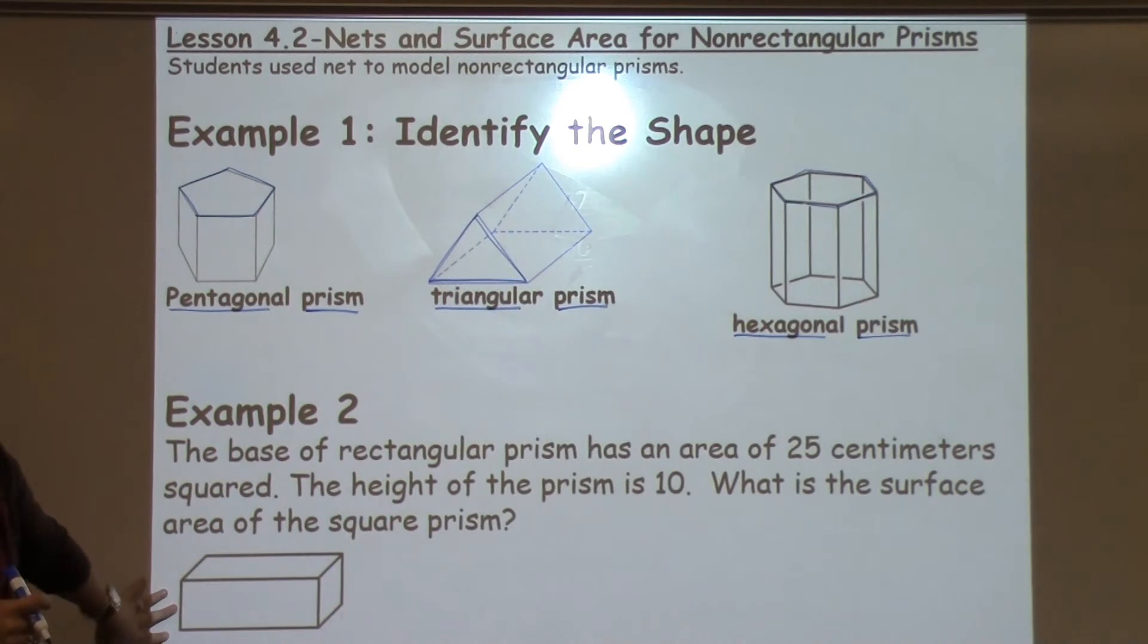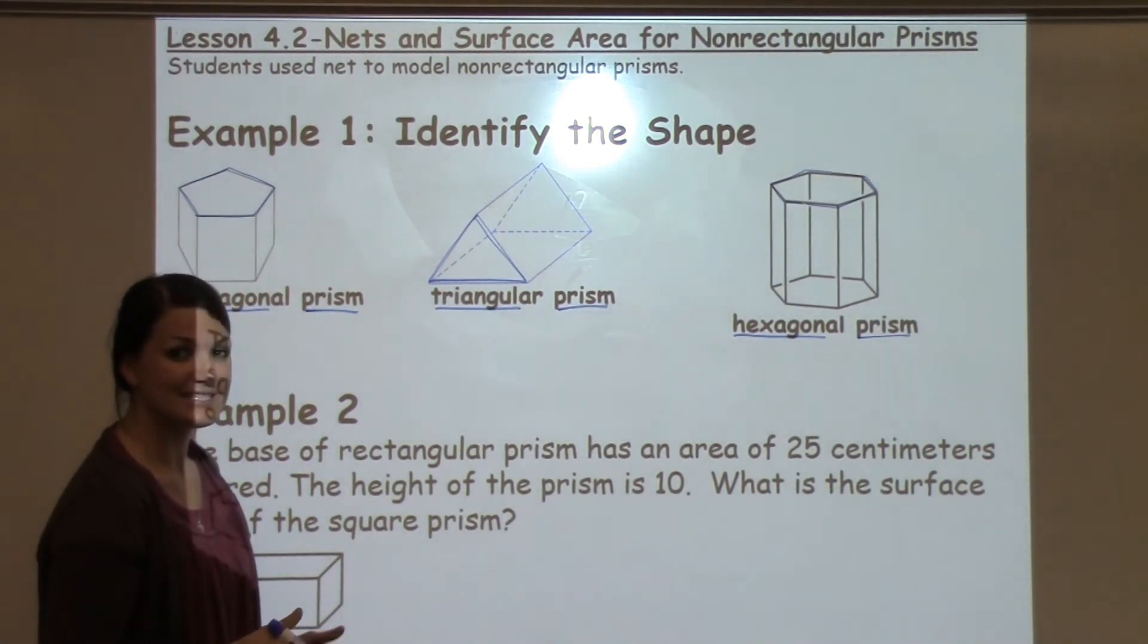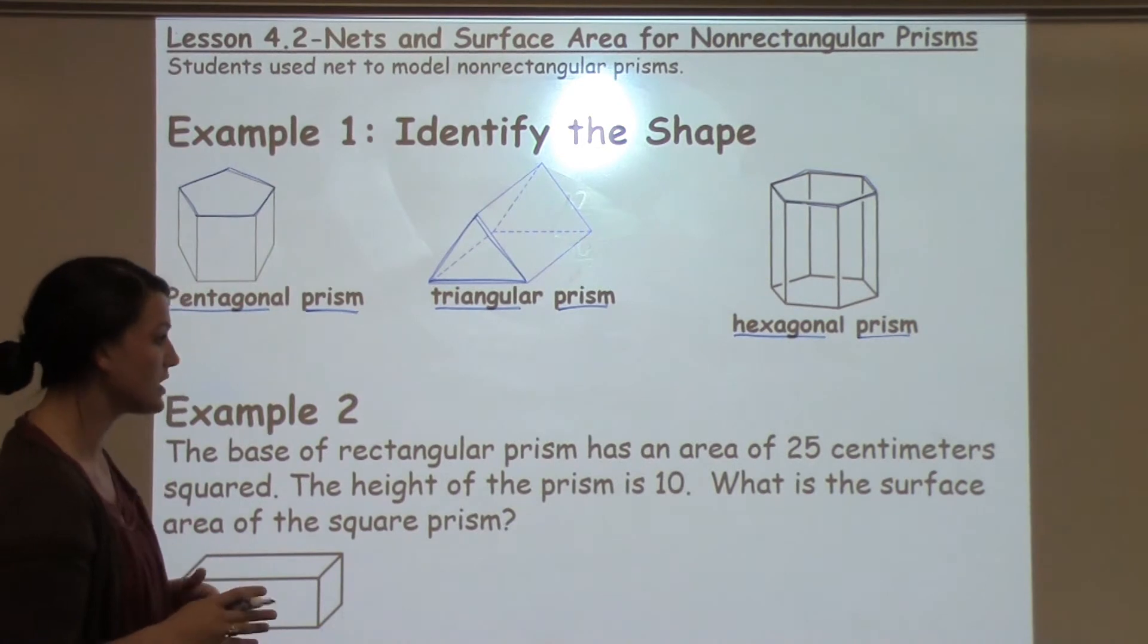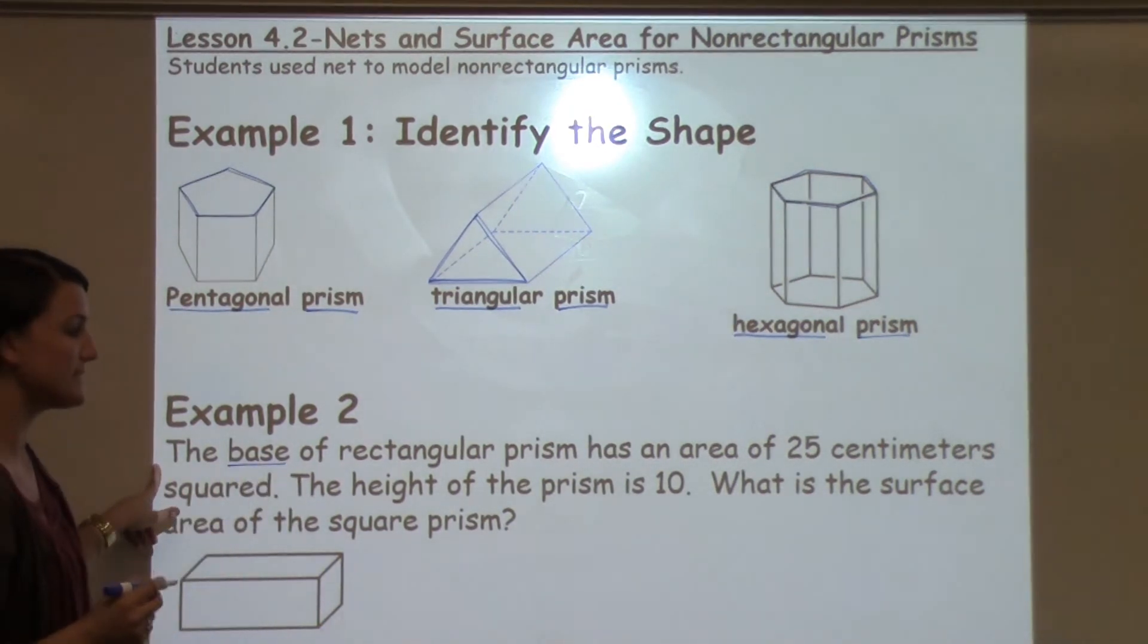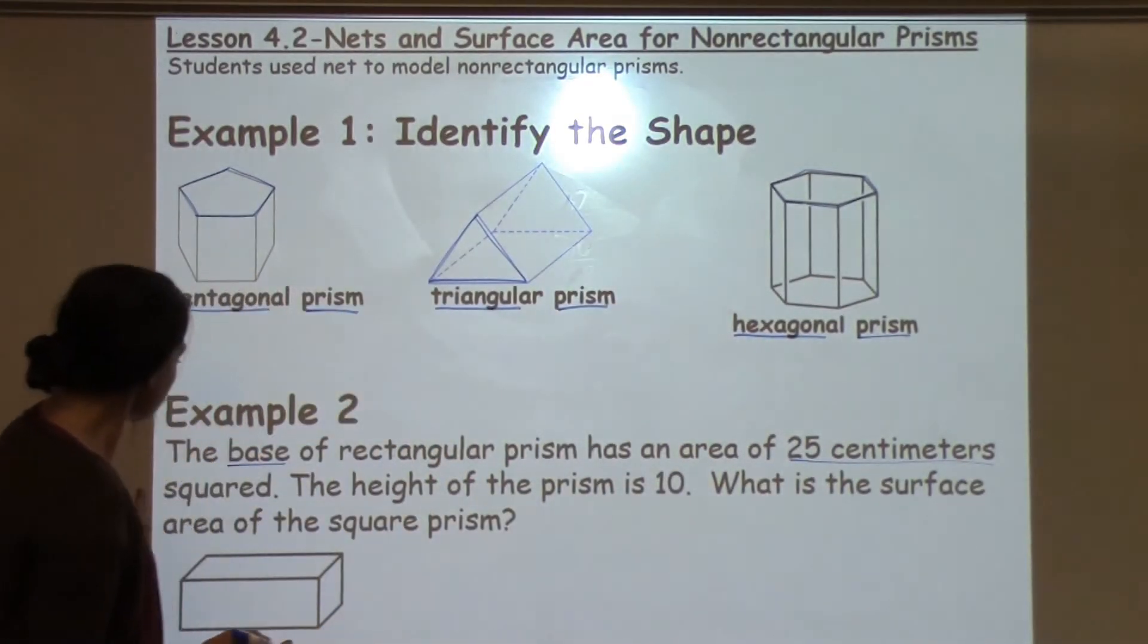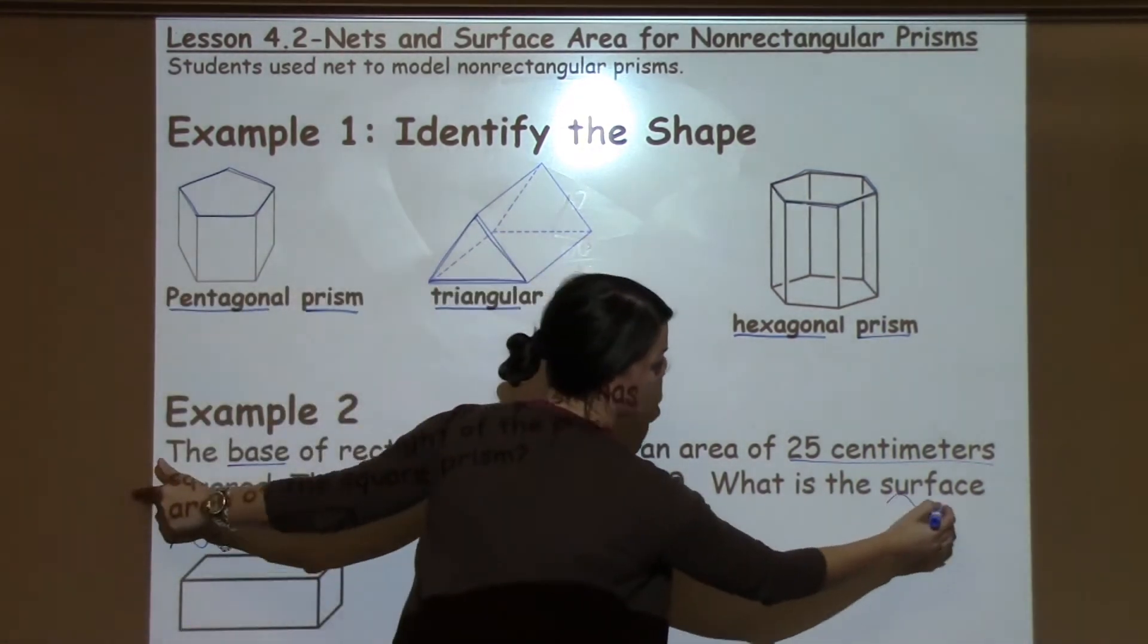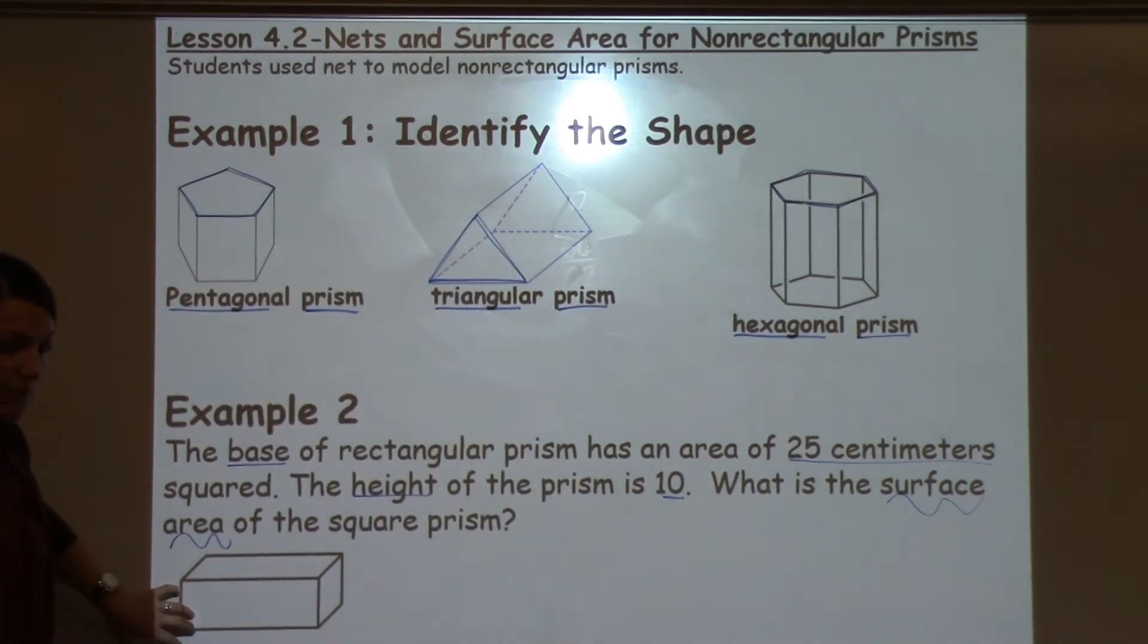Example two, we're working with another rectangular prism. And the reason I'm going to show you this one today is because it's got a little bit of tricky wording where some of the formula is already done for the student, and they have to figure out the other part. So we're going to look at it together. It says, the base of a rectangular prism has an area of 25 centimeters squared. The height of the prism is 10. So what is the surface area of the whole prism? Well, to figure this out, I put a model here to help us visualize.